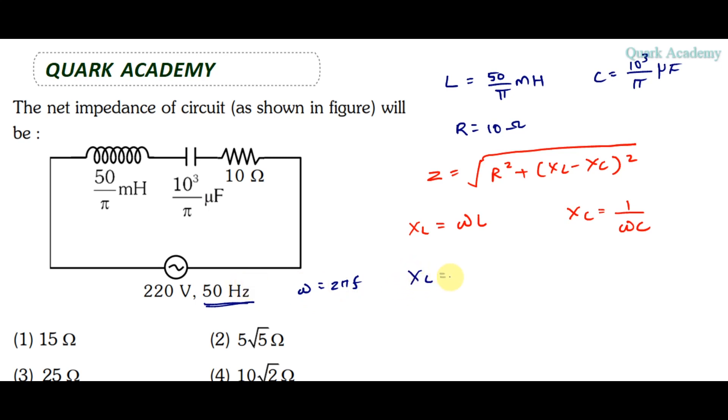First we calculate XL, which is equal to ωL, or 2π into 50 times L. Substituting L as 50 by π millihenry, we convert millihenry to henry using 10⁻³.